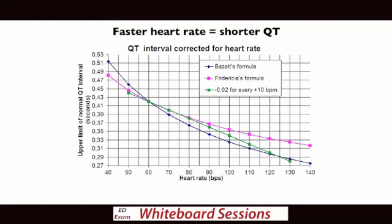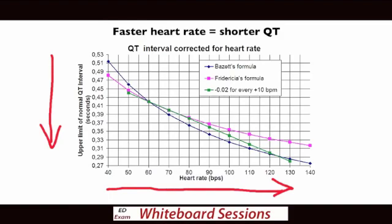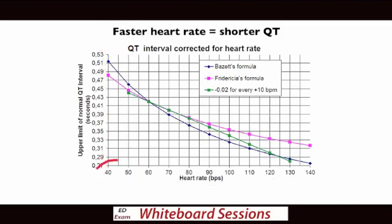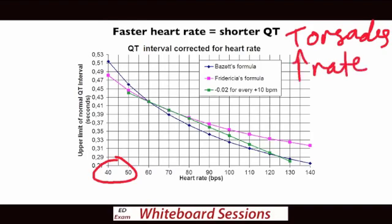This graph shows you how QT changes with rate. The general concept is that as your heart rate goes up, QT interval goes down, and vice versa. So you'll notice that people will have more prolonged QT intervals at slower heart rates. It's not uncommon to get a question where a patient is going in and out of torsades, and in between they have a sinus bradycardia with a long QT. If they're going in and out of torsades, the treatment is to increase the rate.